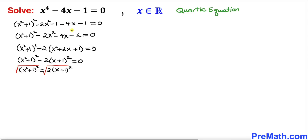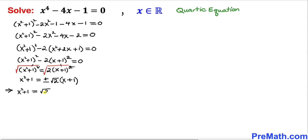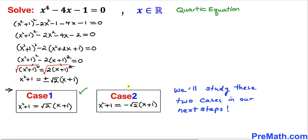Now let's take the square root on both sides to undo those squares. On the left-hand side, the square and square root undo each other, giving x² + 1. On the right, we get ±√2 · (x + 1). Splitting the positive and negative signs gives us two cases: x² + 1 = √2(x + 1) and x² + 1 = -√2(x + 1).